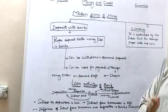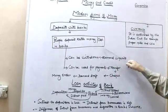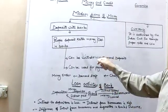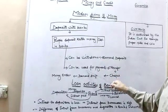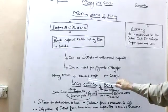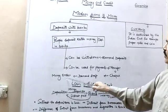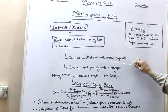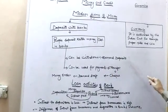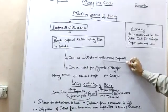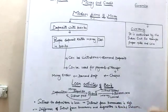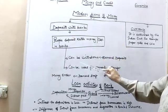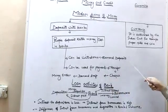If you have a bank account, you can ask for that money and withdraw it. Whatever money we deposit in the bank, we can use it in two ways: first, we can withdraw it ourselves — this is called demand deposit. Second, we can make different types of payments from that money.